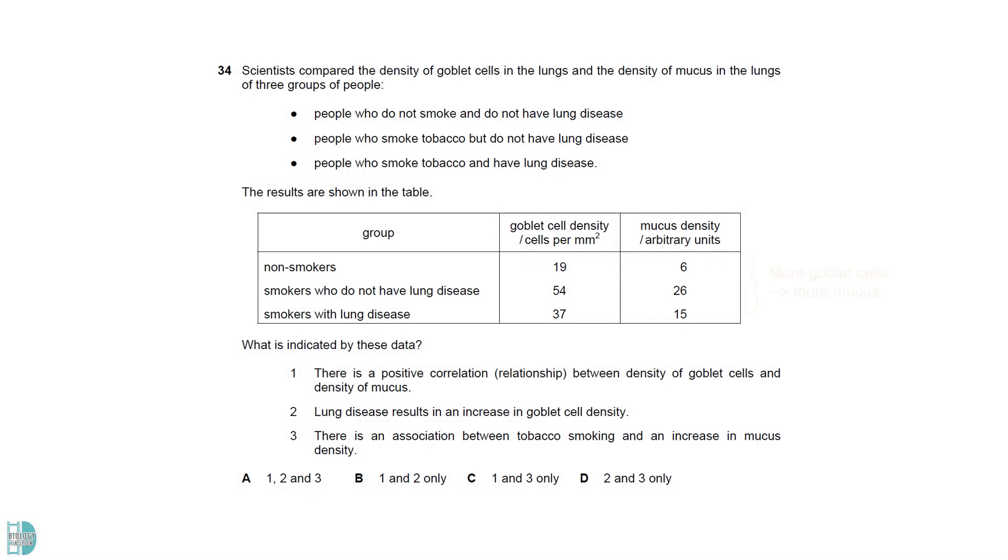One is correct. The data shows that people with more goblet cells have more mucus. Two is not true. Smokers who do not have lung disease have more goblet cells than those with lung disease. Three is correct. Both groups of smokers have greater mucus density than the non-smokers.